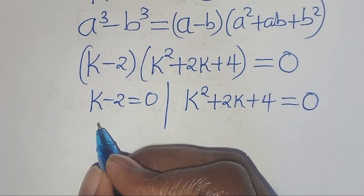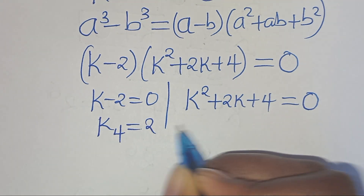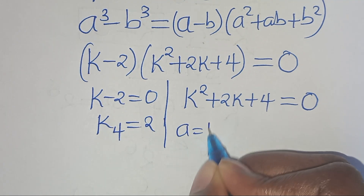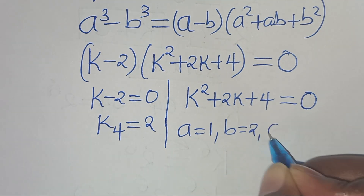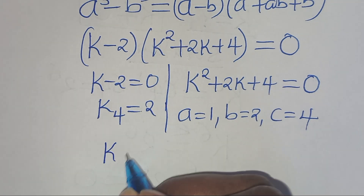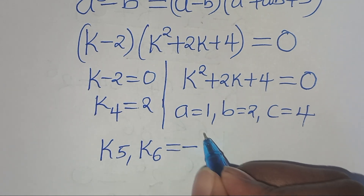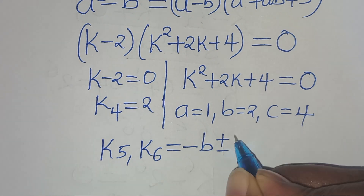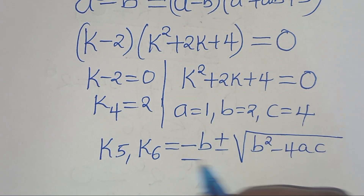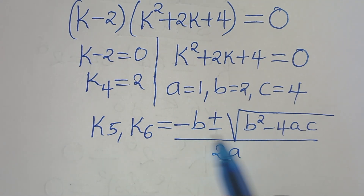From the first part, k4 is equal to 2. The second part is a quadratic equation with a equal to 1, b equal to 2, and c equal to 4. We can solve for k5, k6 by applying the quadratic formula: minus b plus or minus the square root of b squared minus 4ac, divided by 2 times a. Substituting the values, we have minus 2 plus or minus the square root of 2 squared minus 4 times 1 times 4, divided by 2 times 1.